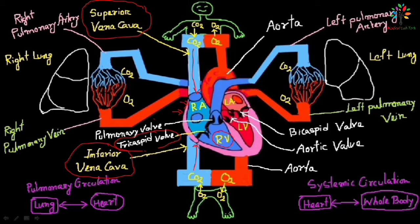Once the right ventricle is filled with blood, the right ventricle contracts. The blood cannot go back into the right atrium. There is another valve at the opening of the pulmonary artery — this is the pulmonary valve. Once the right ventricle contracts, the blood goes out from the heart through the pulmonary artery. The pulmonary valve prevents backflow of blood from the pulmonary artery back into the right ventricle. The pulmonary artery forms two branches.